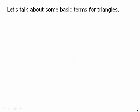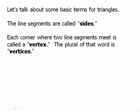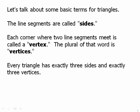Let's talk about some basic terms for triangles. The line segments are called sides, obviously. Each corner where the two line segments meet, where there's an angle, we call that a vertex. And the plural of that word is vertices. So a triangle has three vertices. In fact, every triangle has exactly three sides and exactly three vertices.